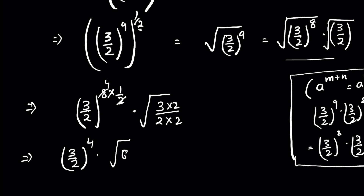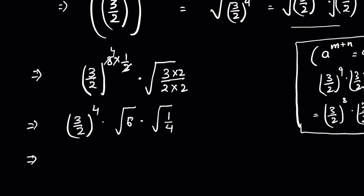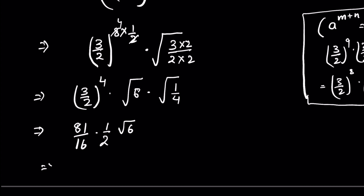So this is 81 upon 16, and the square root of 1 upon 4 is 1 upon 2, and this is the square root of 6. Or you can write it as 81 upon 32 times square root of 6. So this is your answer.